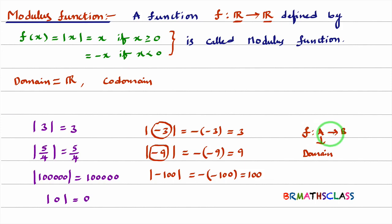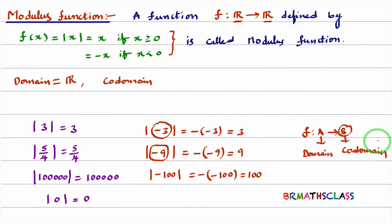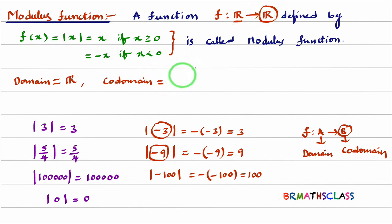What about codomain of modulus function? If f from A to B is a function, then set B is called codomain. Here, the function is from set of all real numbers to real numbers. So the codomain of this function is set of all real numbers.